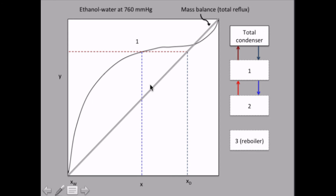So we must be on this point down here. Thus this is the composition of the vapor coming to stage 1, or equilibrium stage 1, from equilibrium stage 2.